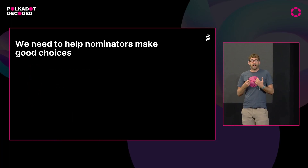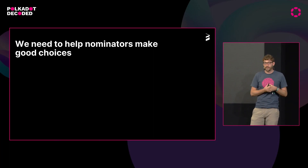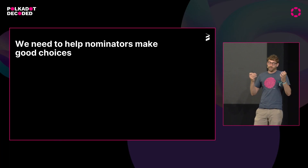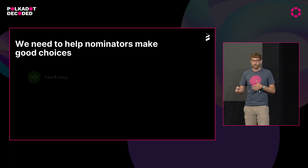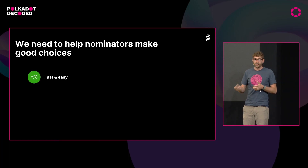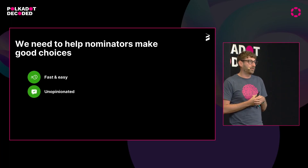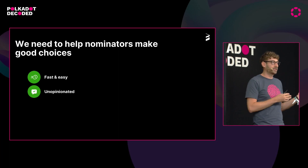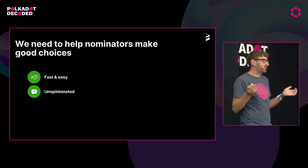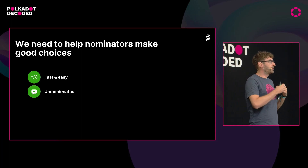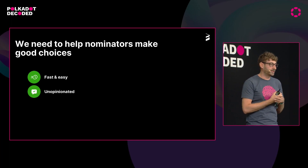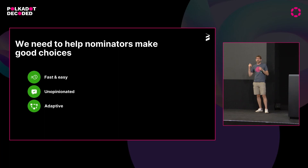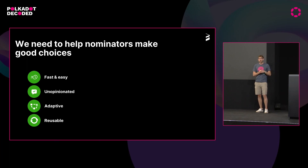So we kind of need to help nominators make good choices and provide some tooling for this. When I started out with this project, I set myself some goals. The first thing is that it should be fast and easy. It should be unopinionated — we don't want to make any assumption about any validator before the process starts, because we don't want to favor or disfavor any of them. The whole preference should really come from the nominators. It needs to be adaptive because the underlying set of active and waiting validators is constantly changing. And ideally, it should be reusable to apply in different areas of the ecosystem.